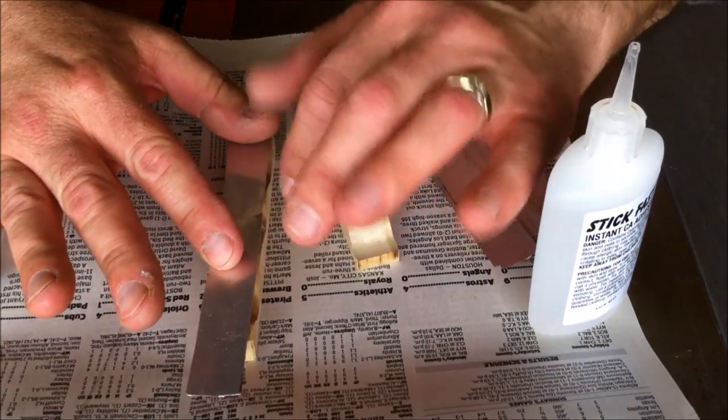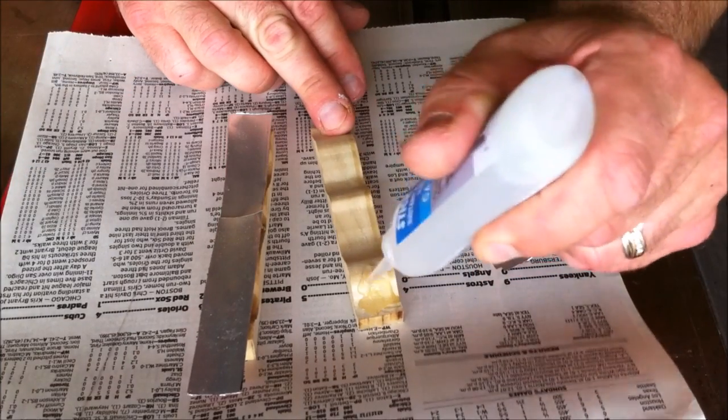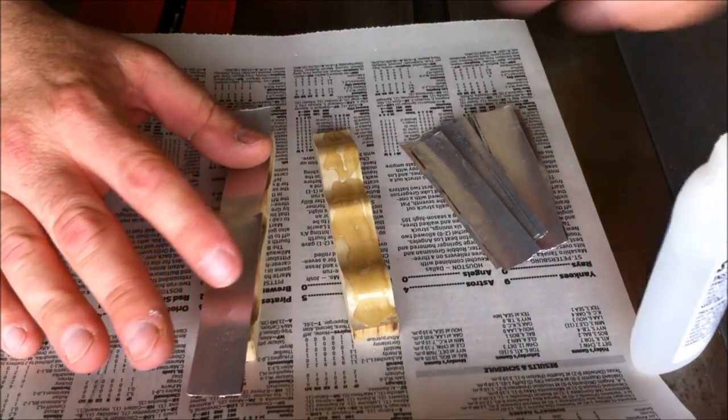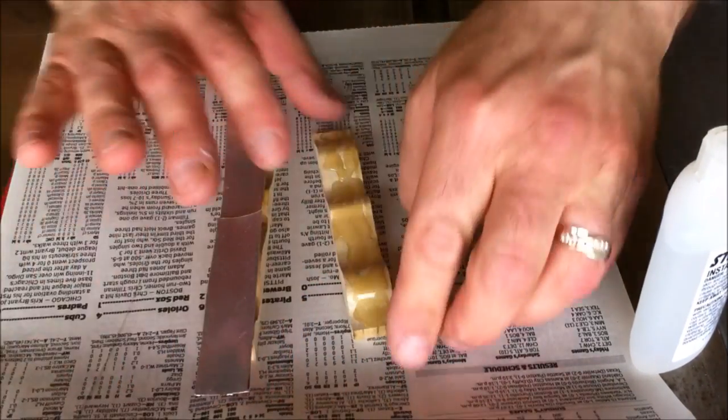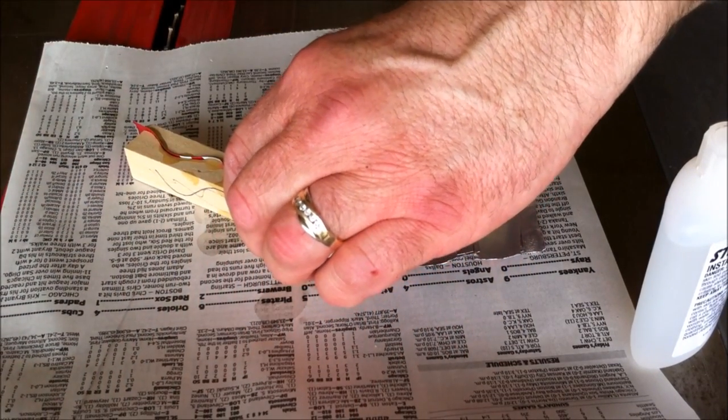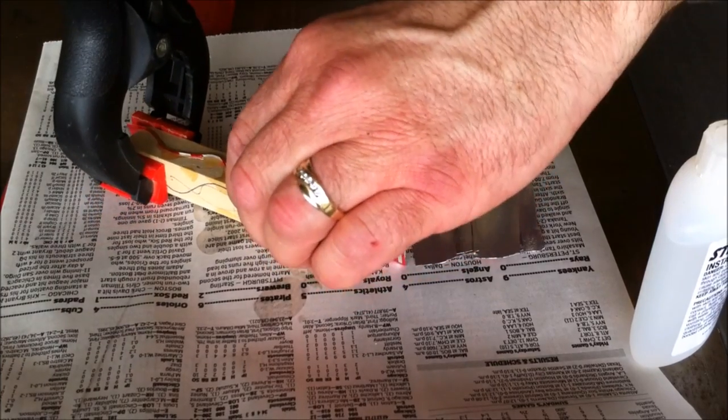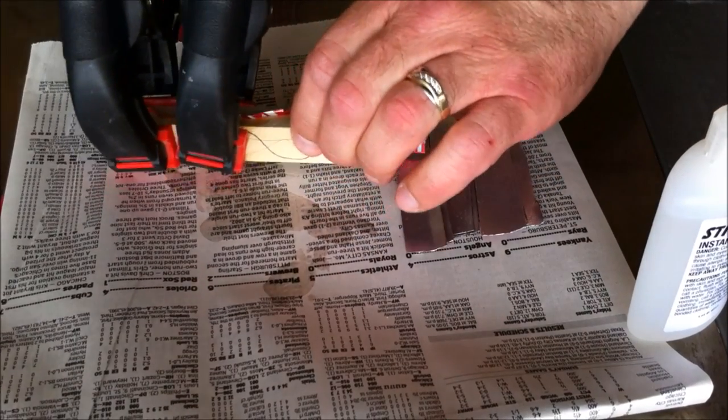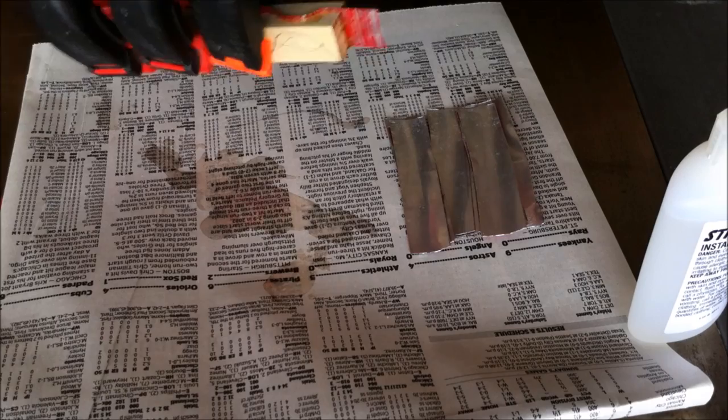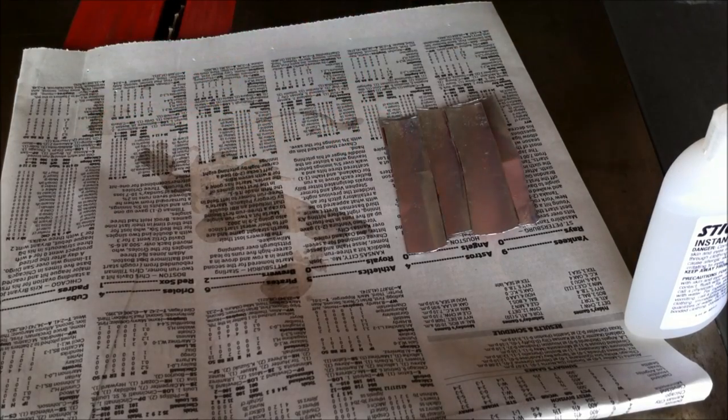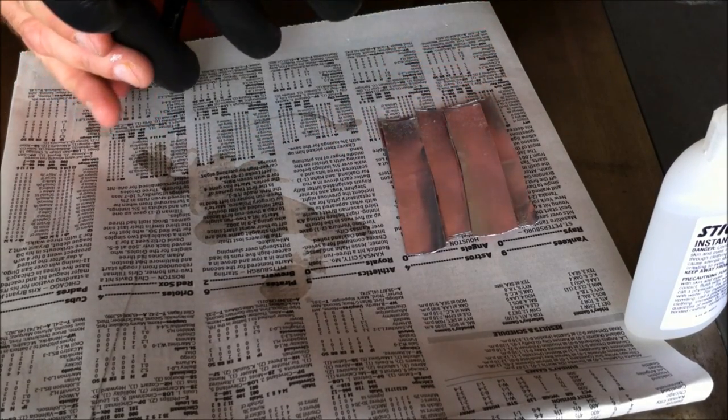A little bit of dust on that one, and let's get this side really good. Okay, and let's flip this over. Now what I want to do is get some clamps on here. There you go. Now we're just going to let her dry.